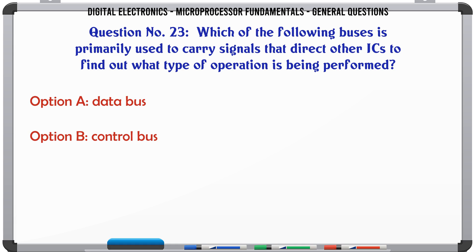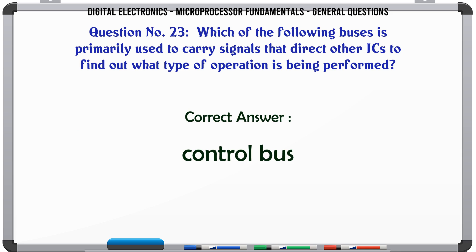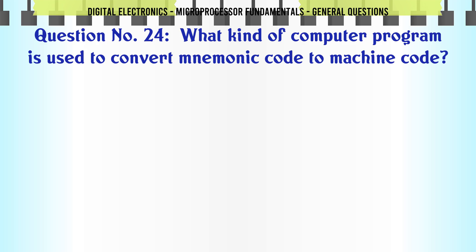Which of the following buses is primarily used to carry signals that direct other ICs to find out what type of operation is being performed? A. Data bus, B. Control bus, C. Address bus, D. Address decoder bus. The correct answer is Control bus.